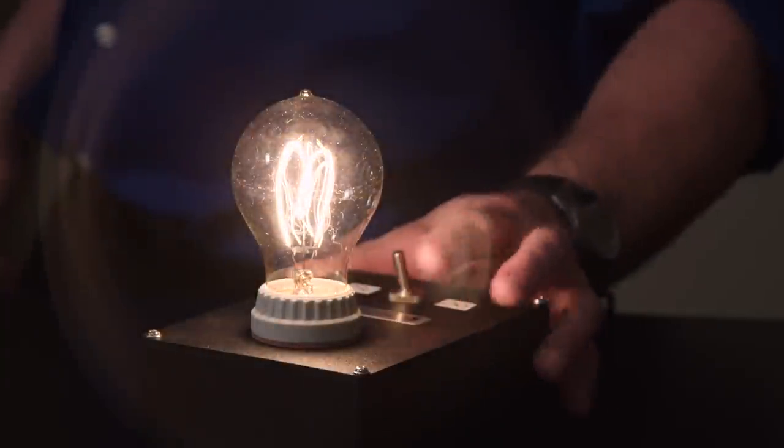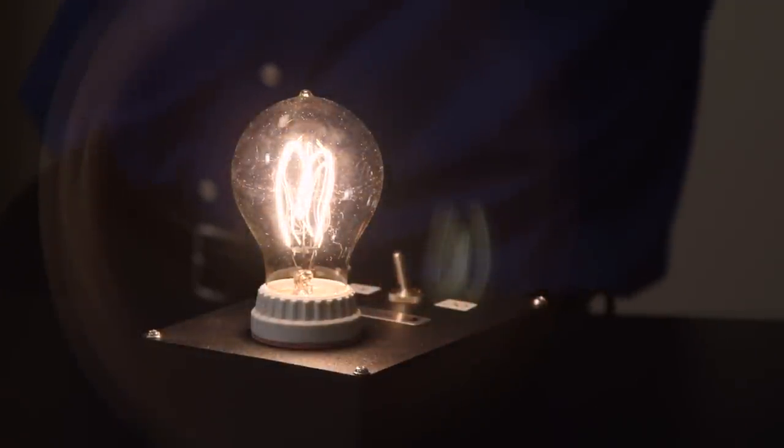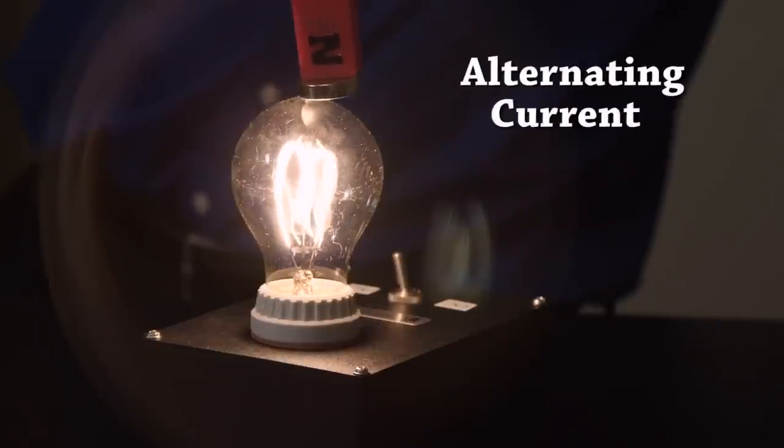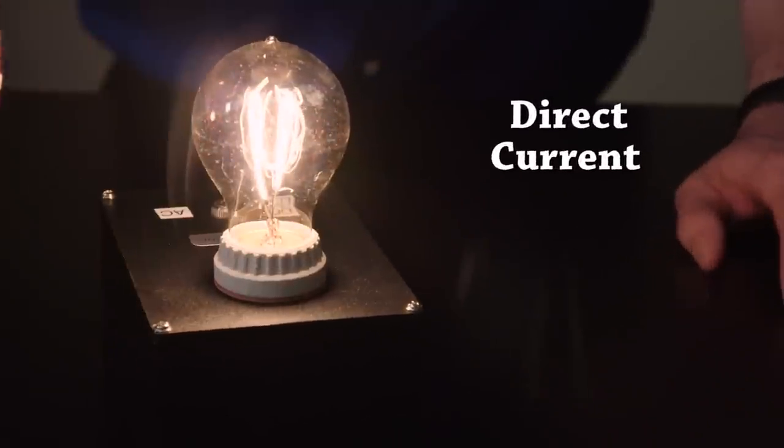Or you can demonstrate the same effect with the electricity and magnetism light bulb demo. When there's an alternating current, it vibrates. But when it's a direct current, we can apply a force in a specific direction. Can you tell what direction the current is flowing?